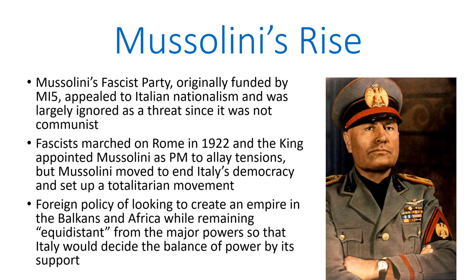Keep in mind that this is while the Bolshevik revolution is still ongoing. The fascists marched on Rome in 1922, and King Victor Emmanuel, in his panic, appointed Mussolini as prime minister to allay tensions and prevent violence. It's also possible that the fascists who marched on Rome were not actually planning violence and that Victor Emmanuel panicked and jumped the gun. But at any rate, this put Mussolini in power as prime minister, and he quickly moved to end Italy's democracy and set up a totalitarian government.